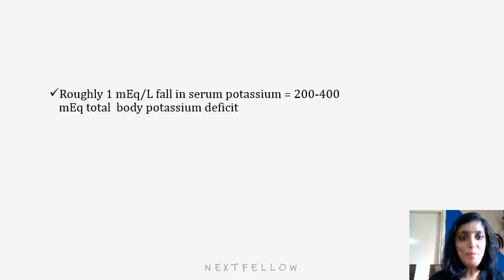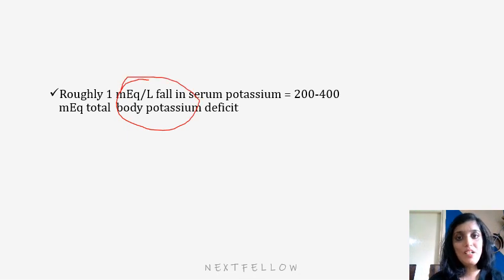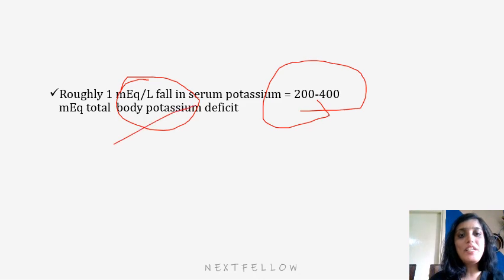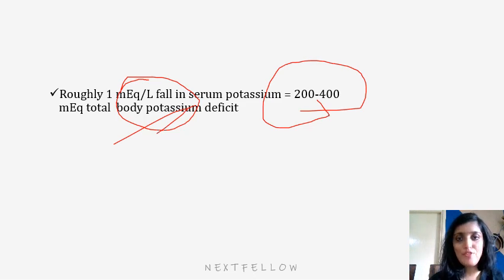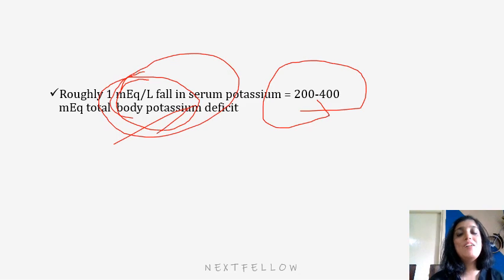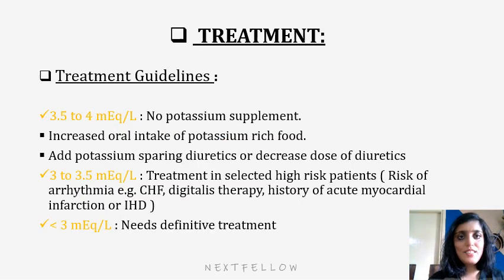Approximately a 1 mEq/L drop in serum potassium will lead to a 200 to 400 mEq body potassium deficit. This also means that if you supplement the patient with around 200 to 400 mEq of potassium, the serum potassium level will increase only by 1 mEq per liter.